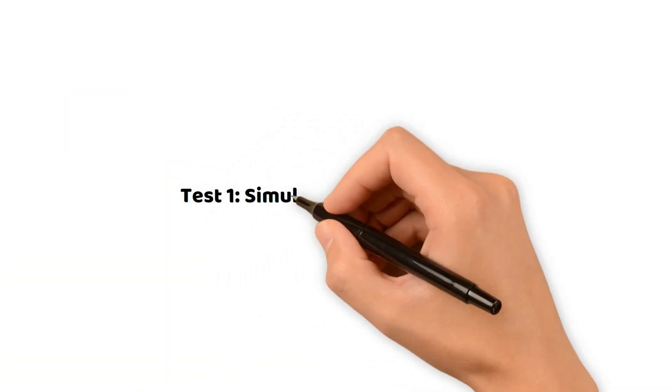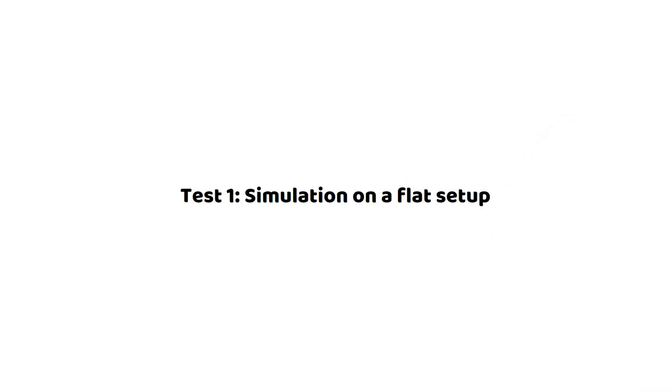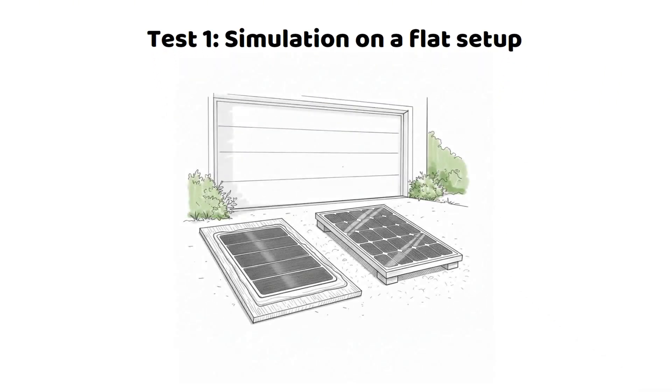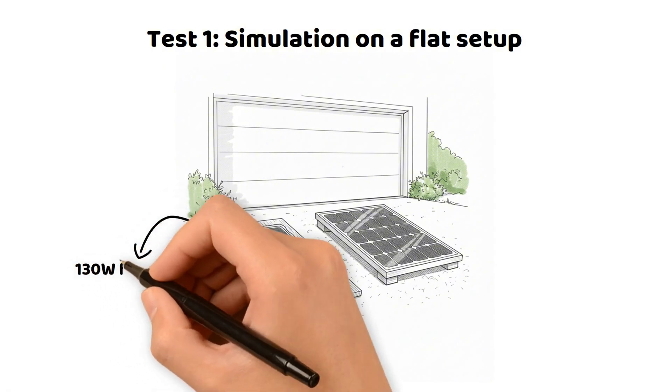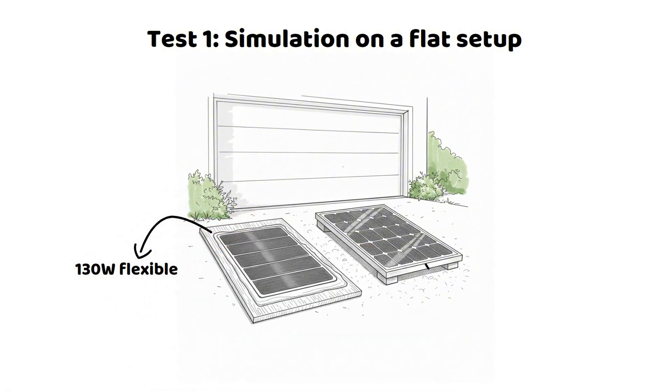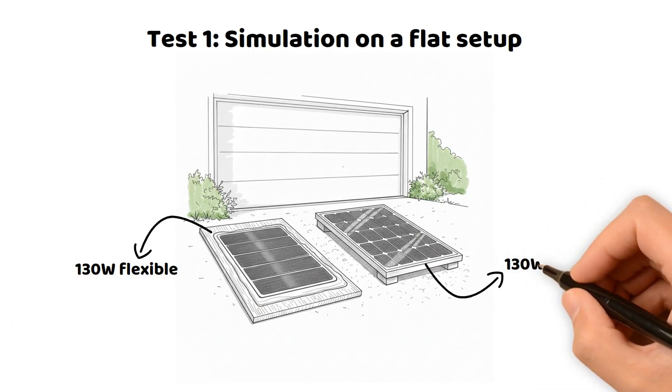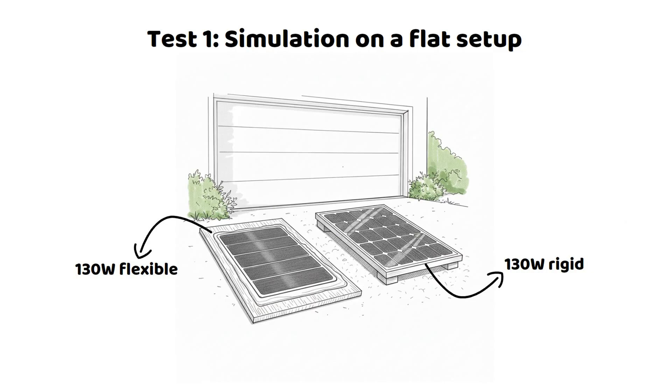So here I did two types of tests, flat and tilted. So we are going to start by comparing the two 130 watt panels. Here on the left is the 130 watt flexible panel. This is of course illustrated because as you know, I have my whiteboard style of video and I like to stick to it as much as I can. So here I tried to create a drawing that shows the test to make it more visual and easier to understand. On the right then is the rigid 130 watt panel as well.